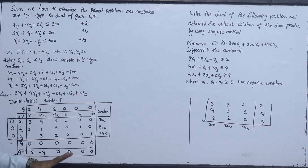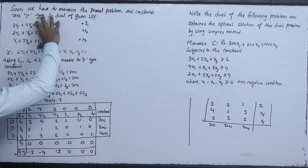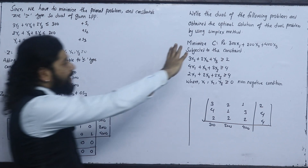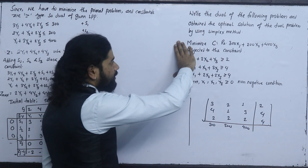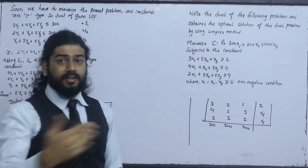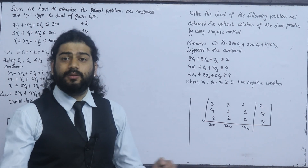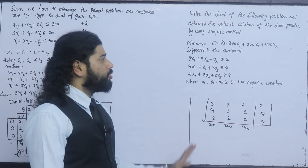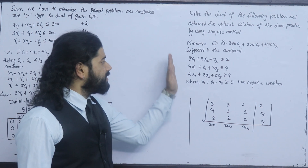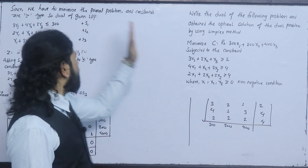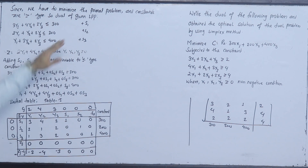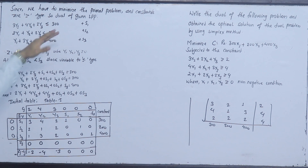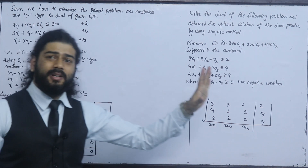In duality, this part is slightly different from before. In the previous question we used maximization directly with simplex method, but in this duality topic we cannot do that — we have to convert it to dual form first. Then we solve it, and what we need to do is maximize it. So we have to do the maximization using simplex method.